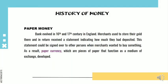Due to the disadvantages of gold and silver, banks evolved in the 16th and 17th centuries in England. Merchants used to store their gold there, and in return received a statement indicating how much they had deposited. This statement could be signed over to other persons when merchants wanted to buy something, and as a result, paper currency — pieces of paper that function as a medium of exchange — developed.